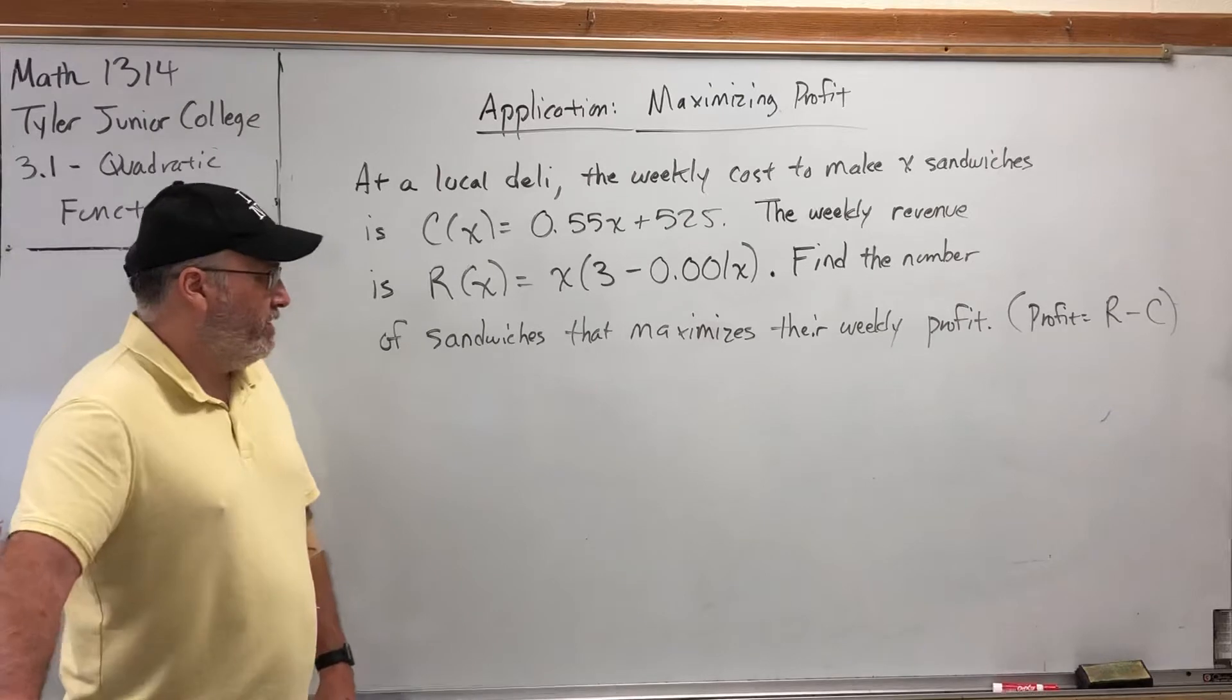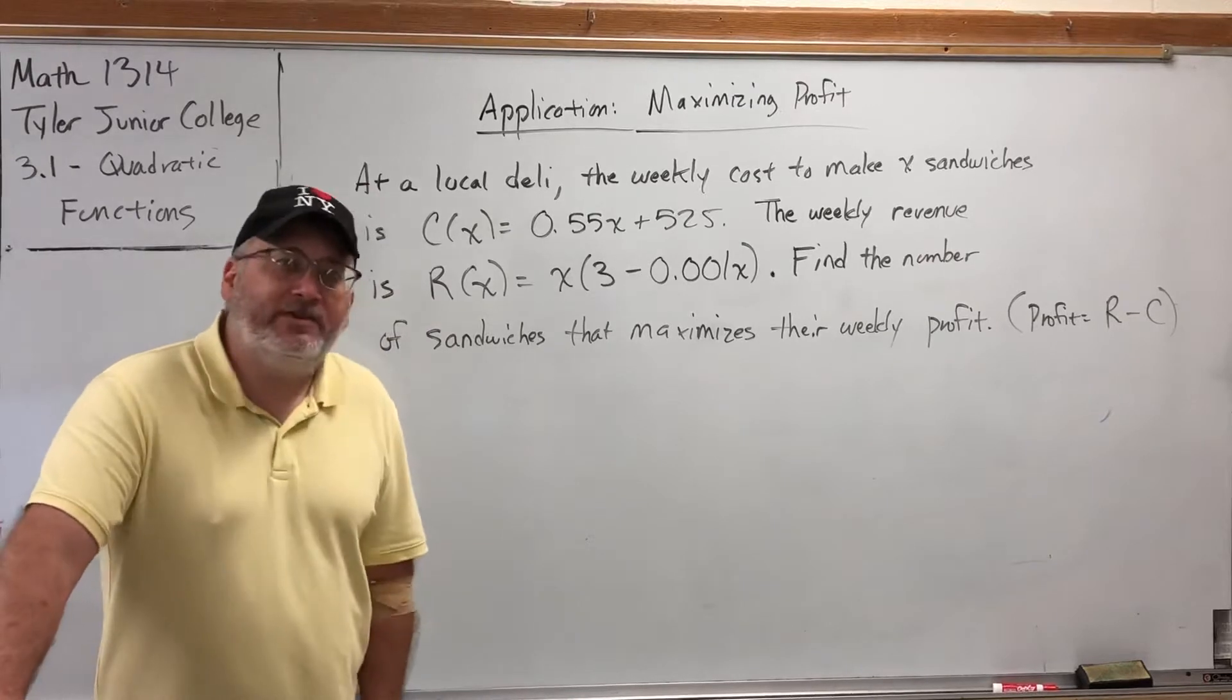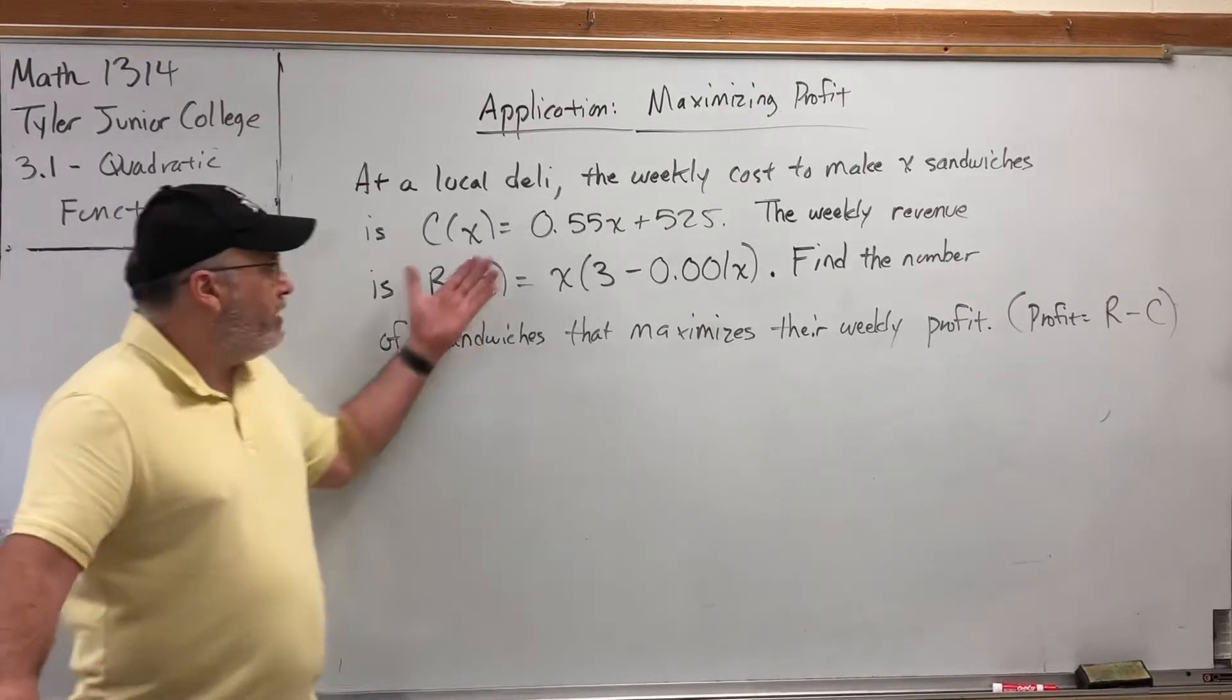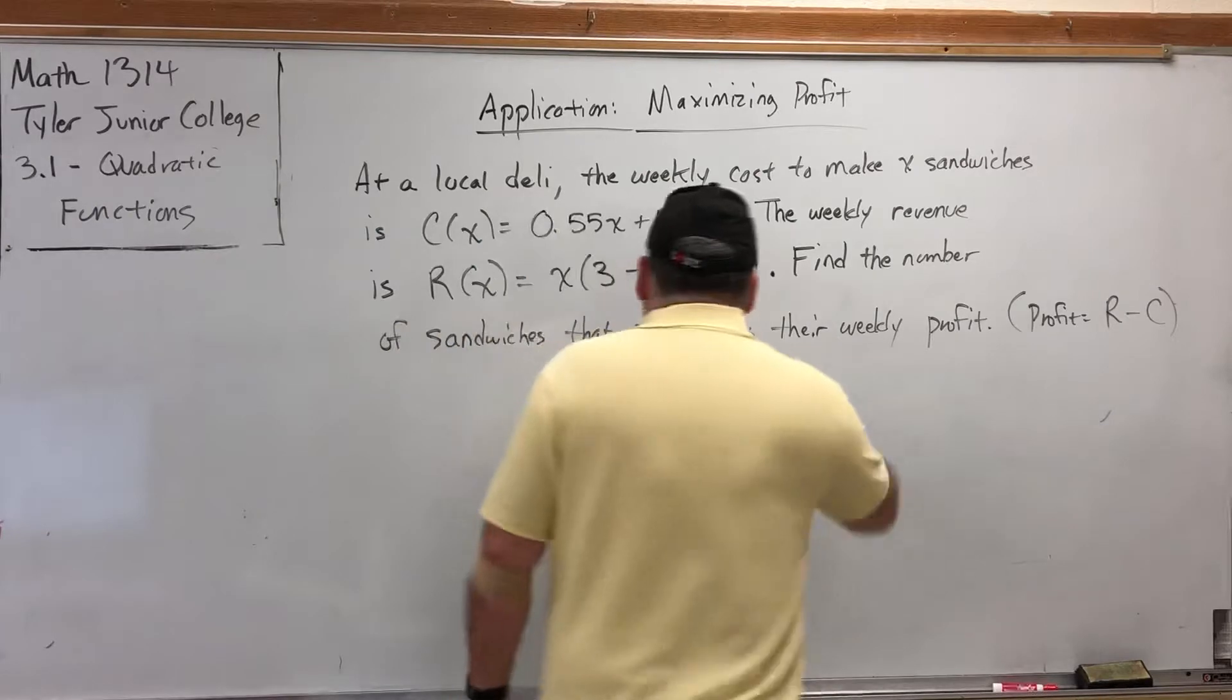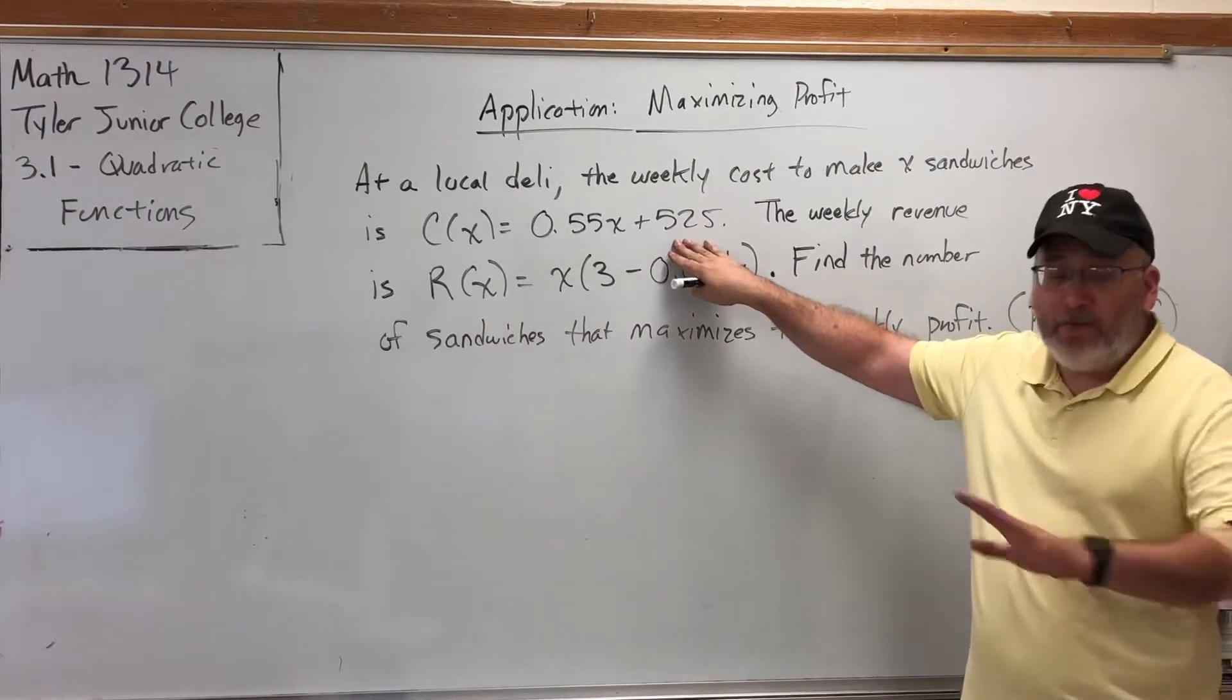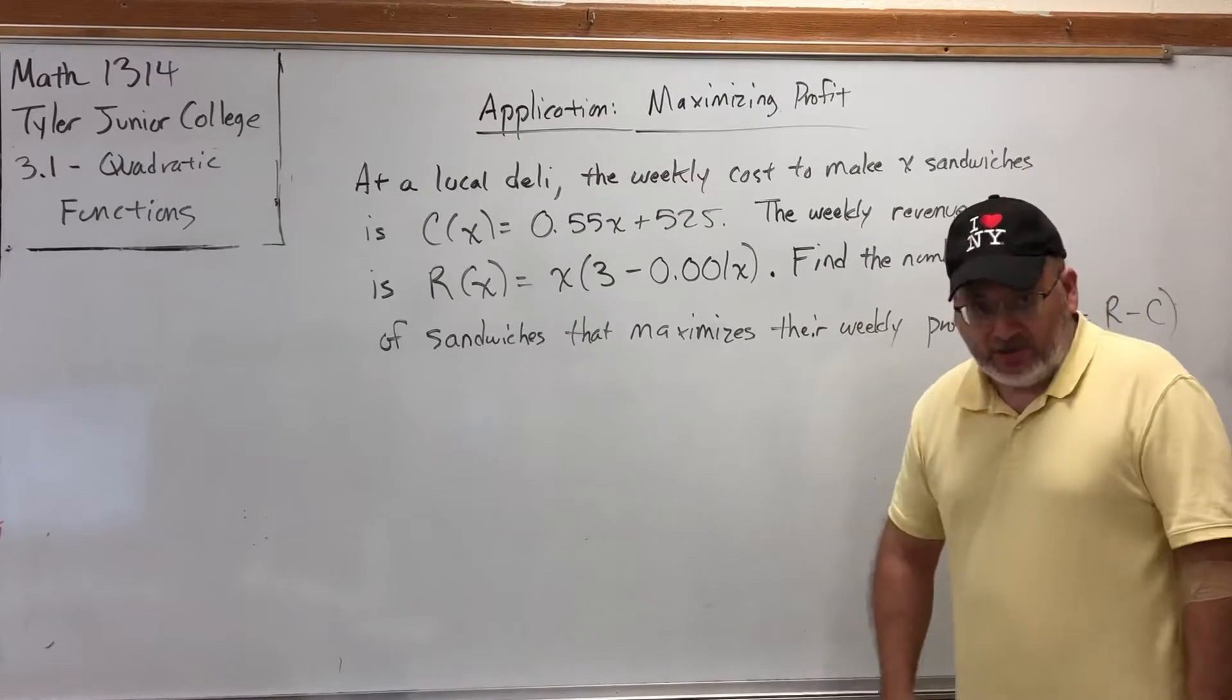Before we go any further into the question, I want to briefly explain where this function would come from. For those of you who are going to take a business math class, you'll discuss this in a lot greater detail. This cost function represents two things: fixed cost and variable cost. This plus 525 means that the deli spends $525 a week, period, regardless of the number of sandwiches they make, possibly for rent, for supplies, et cetera.